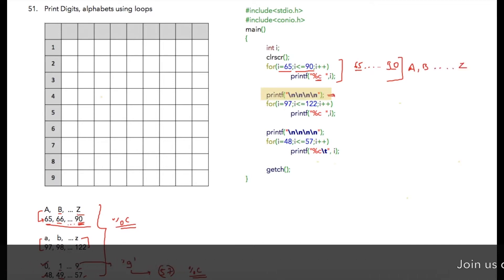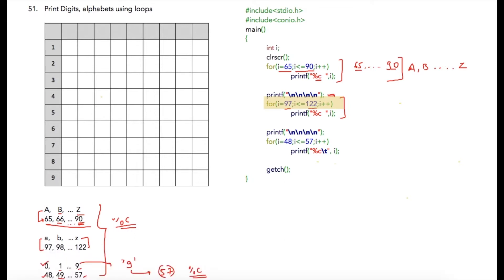Then I am adding a few newlines for better reading on the screen. Then in the next part a similar loop starting with 97 ending at 122, again integer i is printed as a character, so small a, b and so on till z will be printed. Again a few newline characters and then final loop where it is starting from 48 till 57.